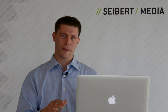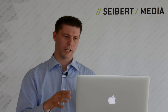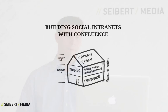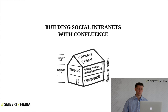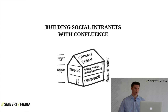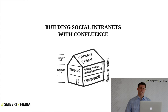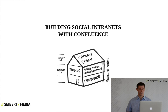Let's take a look at the house here. It consists of Confluence, which is our basement — the main engine we'll use to drive our intranet 2.0 or social intranet — but it also consists of plugins, personalization, internationalization, and corporate design.